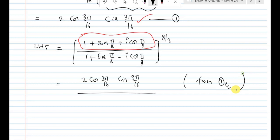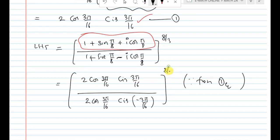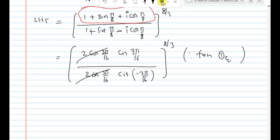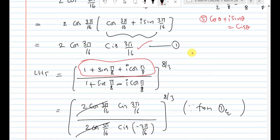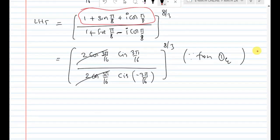Using Formula 6: cis(α) / cis(β) = cis(α - β). The denominator gives cis(-(3π/16)) since it involves minus. So we have cis(3π/16) / cis(-3π/16) = cis(3π/16 - (-3π/16)), whole power 8/3.